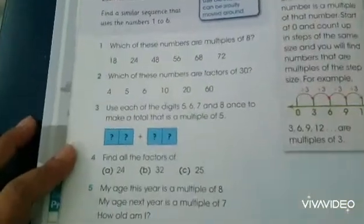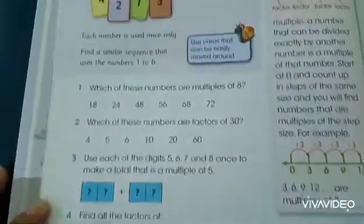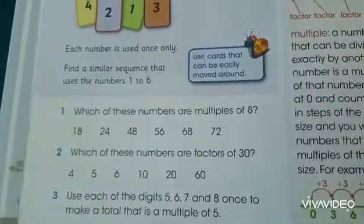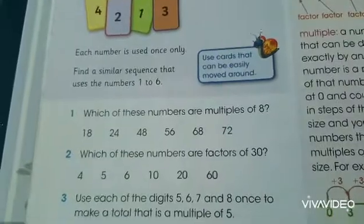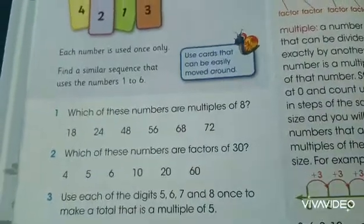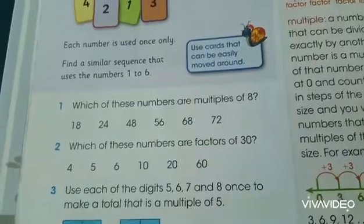We are going to solve this problem, number 1 until number 5. For number 1, which of these numbers are multiples of 8? Mana saja yang termasuk perkalian 8? Number 2, which of these numbers are factors of 30? Mana saja angka-angka yang menjadi faktor dari 30?